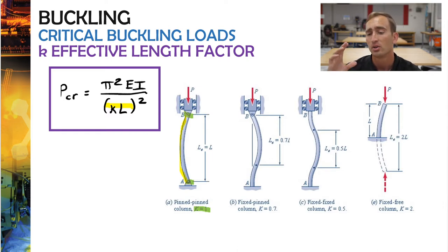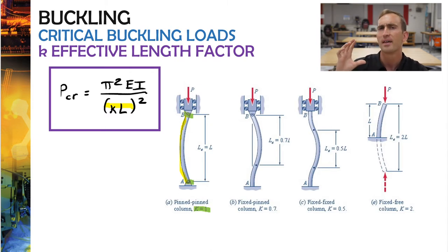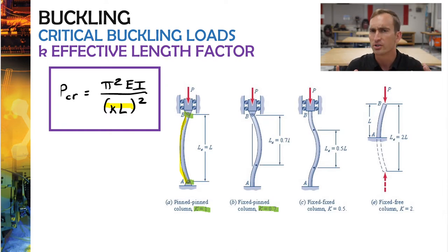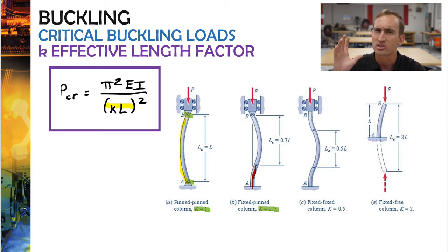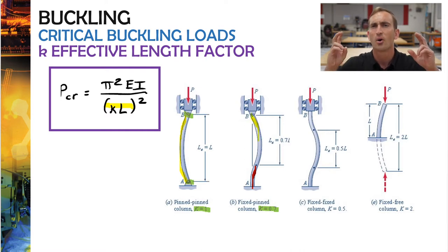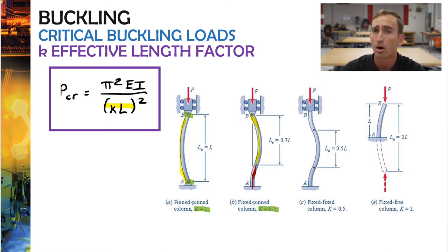When you look at an example where it's pinned and fixed, you could imagine that if that beam or column is fixed at the ground, that bottom part is more rigid and less likely to bend. So K of 0.7 basically means that only 70% of the overall length can really buckle — essentially a shorter effective length, which makes it harder to buckle. The only portion that's really bending is about 70% of the column.